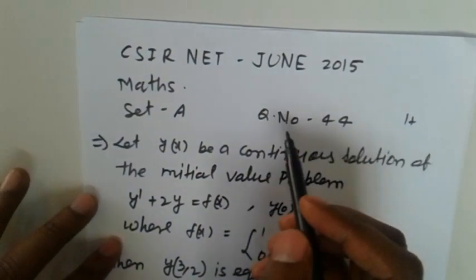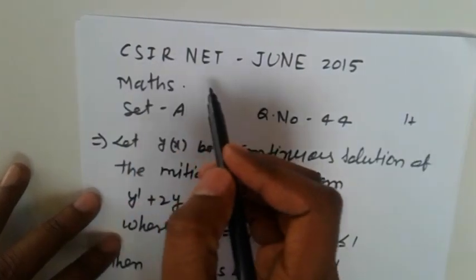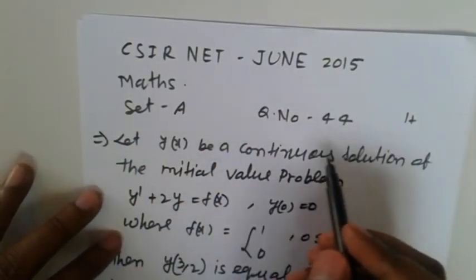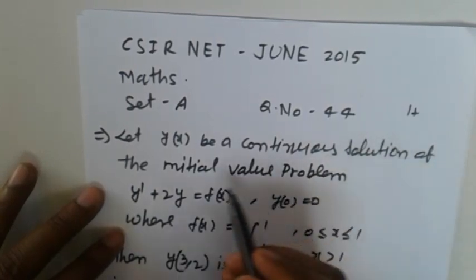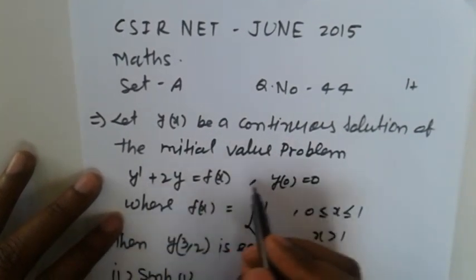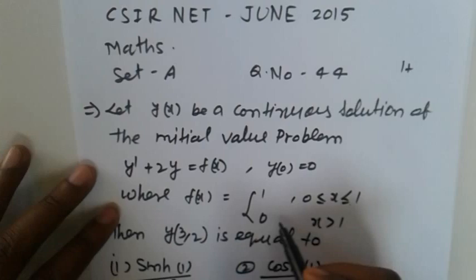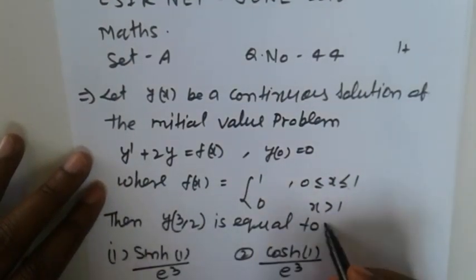Hello friends, next topic is CSIR NET June mathematics. This question, given Y is a continuous initial value problem, here is given f(x) in a specific format, and then find out what is asked.